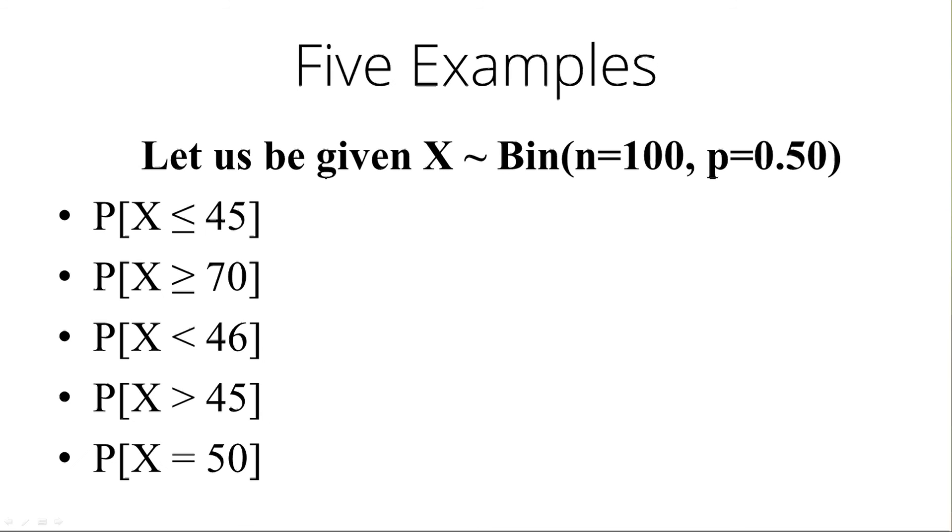So let's have five examples. So the first one, let's be given that X has a binomial distribution of 100 trials where n equals 100, and the probability of success is 0.50. For instance, we're flipping a coin 100 times, a fair coin. And we want to calculate the probability that I get a certain number of heads. The first one is the probability that the number of heads is less than or equal to 45. That is, when I flip the coin 100 times, I will get anywhere between 0 and 45 heads. Let's calculate that in StatCrunch.